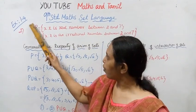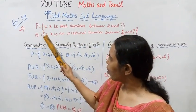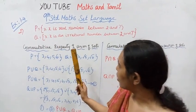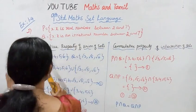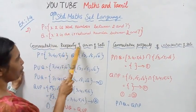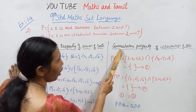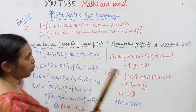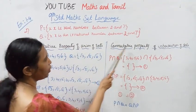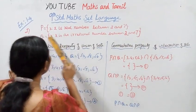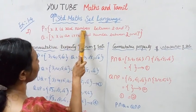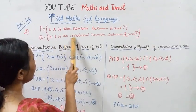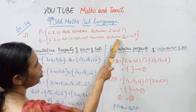Okay, Exercise 1.4, the second sum. P and Q are sets. If P is the set of real numbers between 2 and 7, and Q is the set of irrational numbers between 2 and 7.